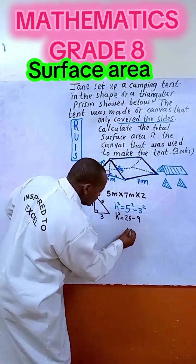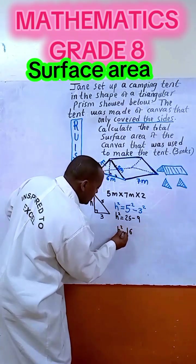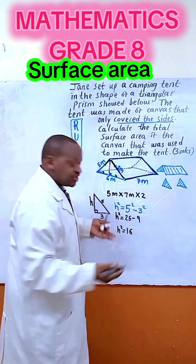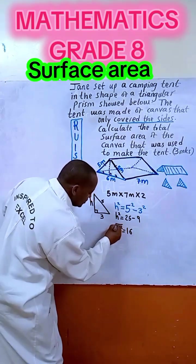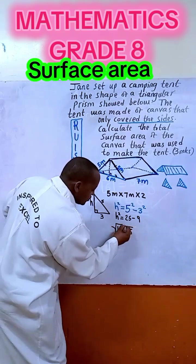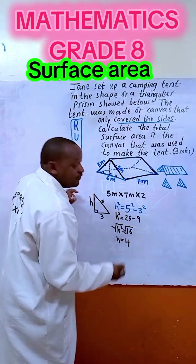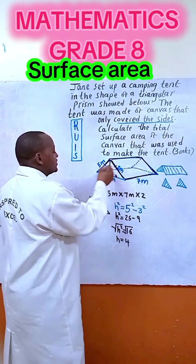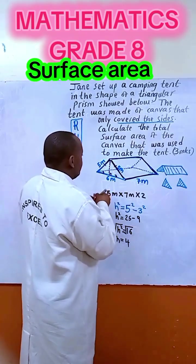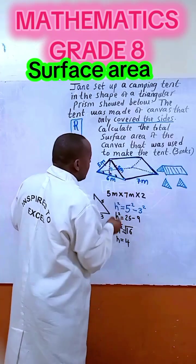16. So we write 16, so h squared equals to 16. So what is h? Square root. So our h is 4, very simple. So this is our h here is 4.